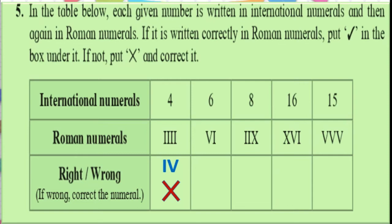Moving to the second column: 6 written as VI. According to rule 3, this is correct. Now the third column: 8 written as IIX. This is wrong, because according to rule 4, we can write I to the left of a bigger number only one time. So how do we write 8? V is 5, and we can write I three times to the right: 5, 6, 7, 8 — that is VIII.